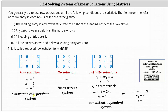If the system has no solution, in reduced row echelon form the augmented matrix will resemble the form shown in the middle. Focusing on row three, we have 0, 0, 0, 5. This translates to the equation 0 equals 5, which is never true. This indicates there is no solution and the system is inconsistent.